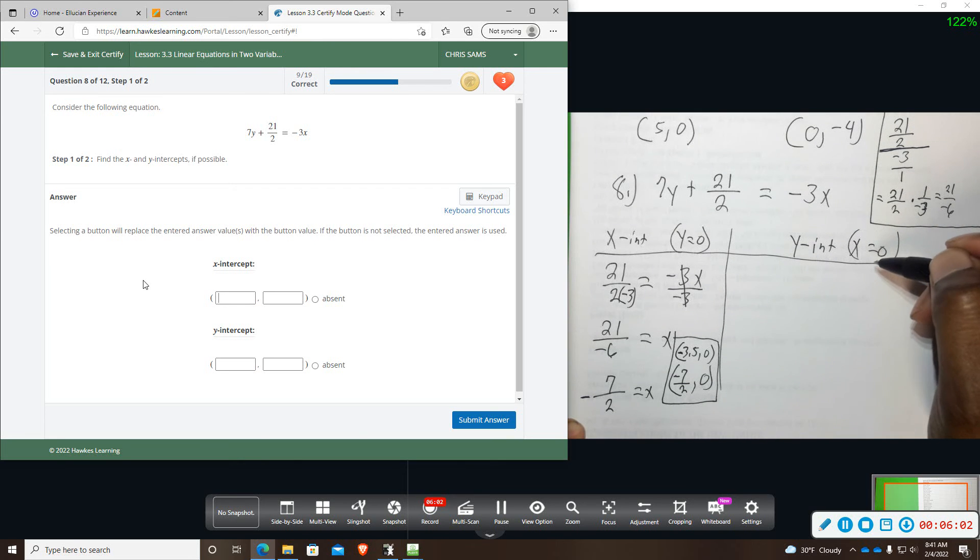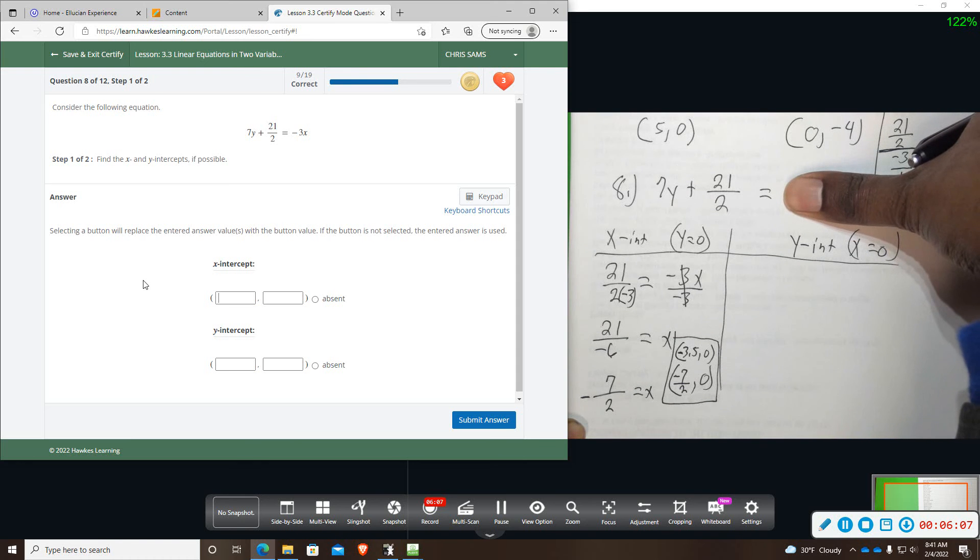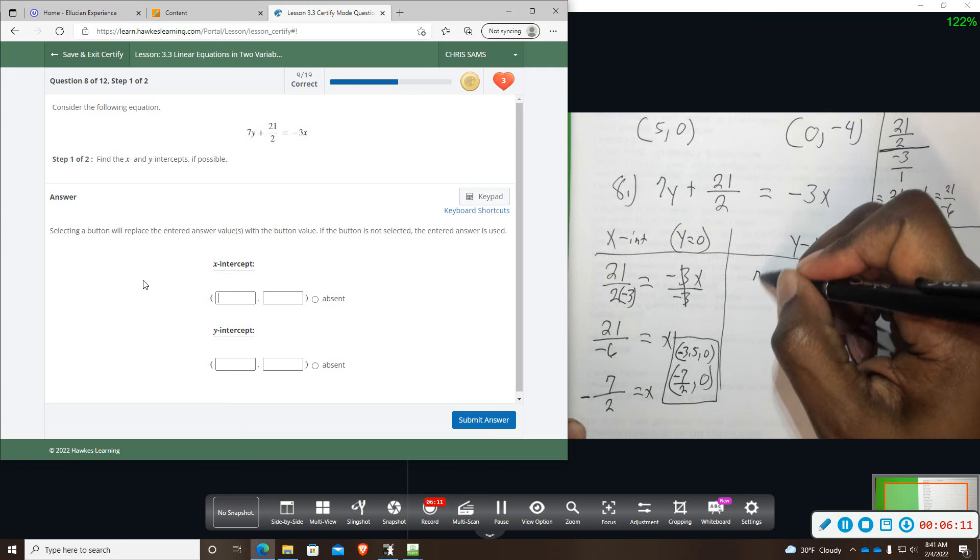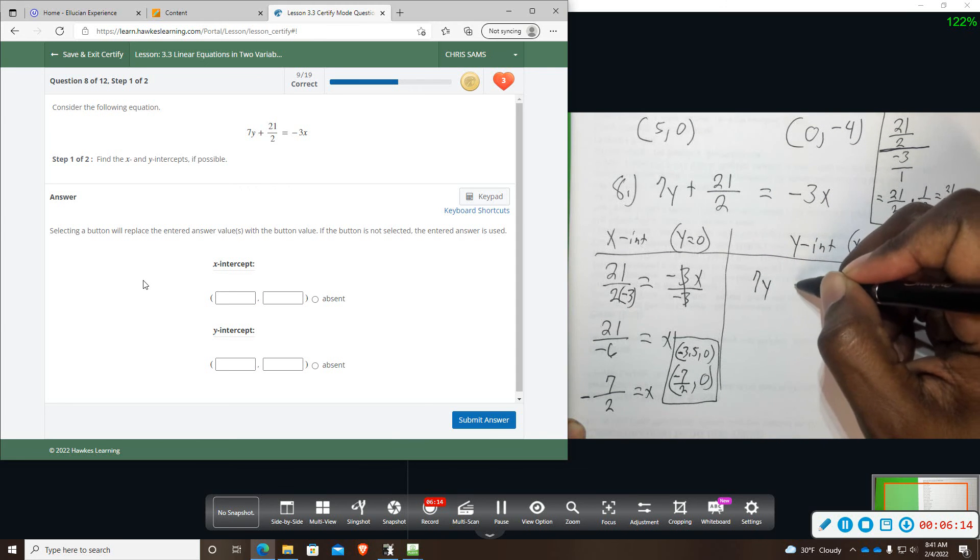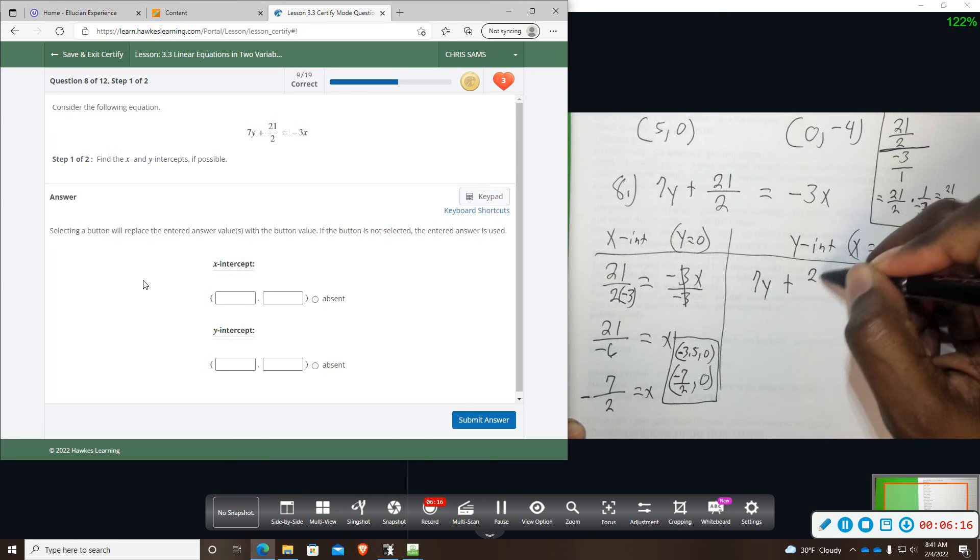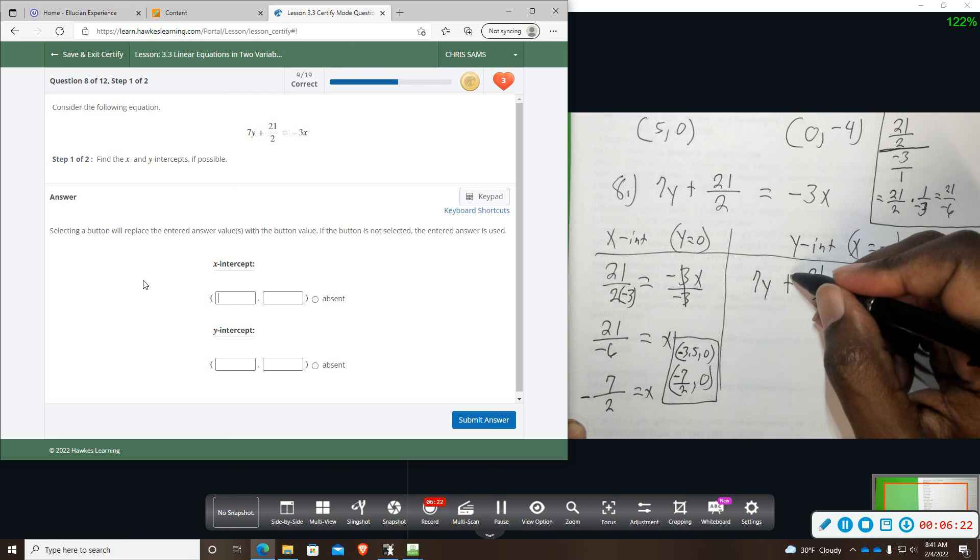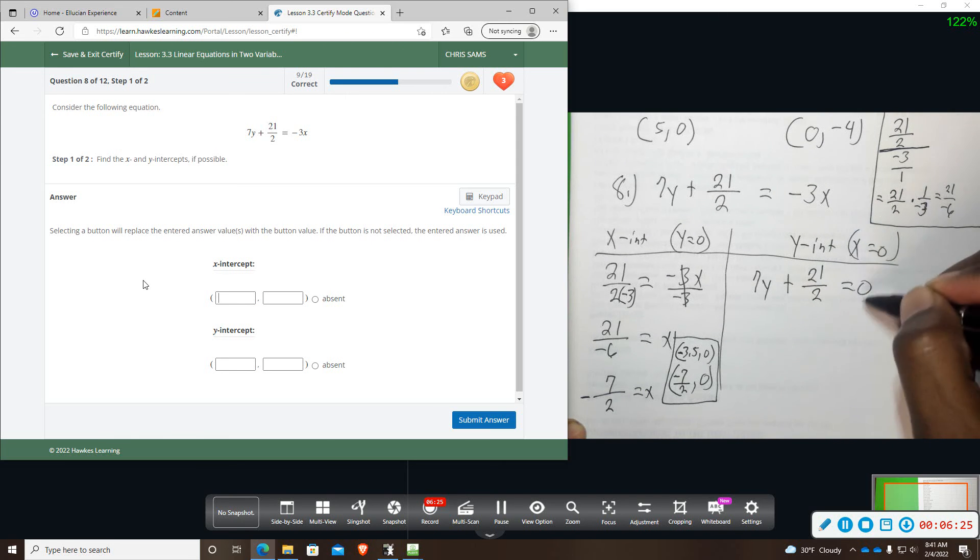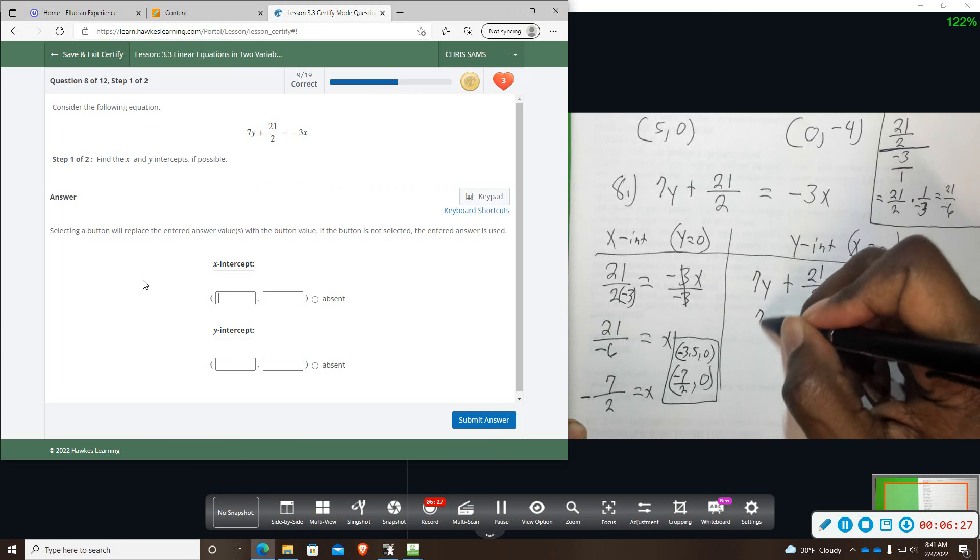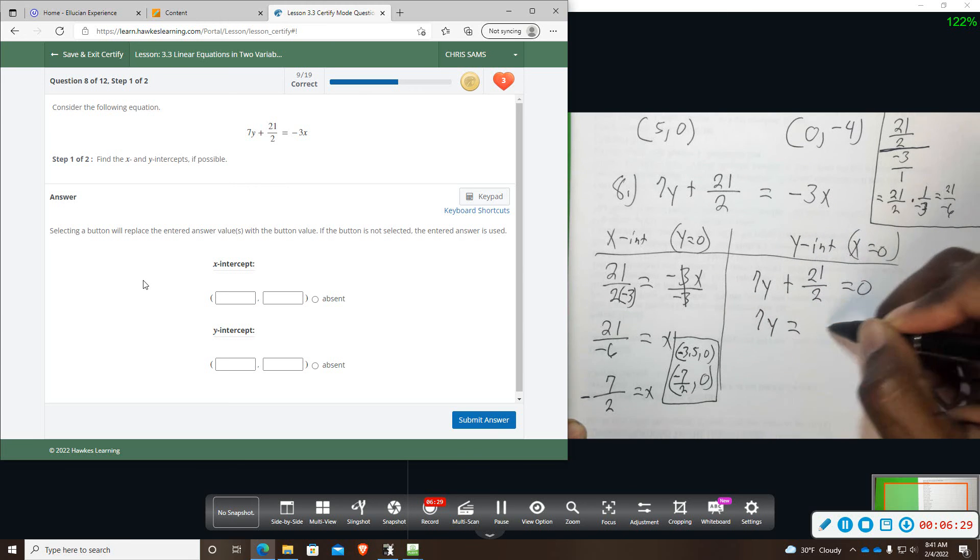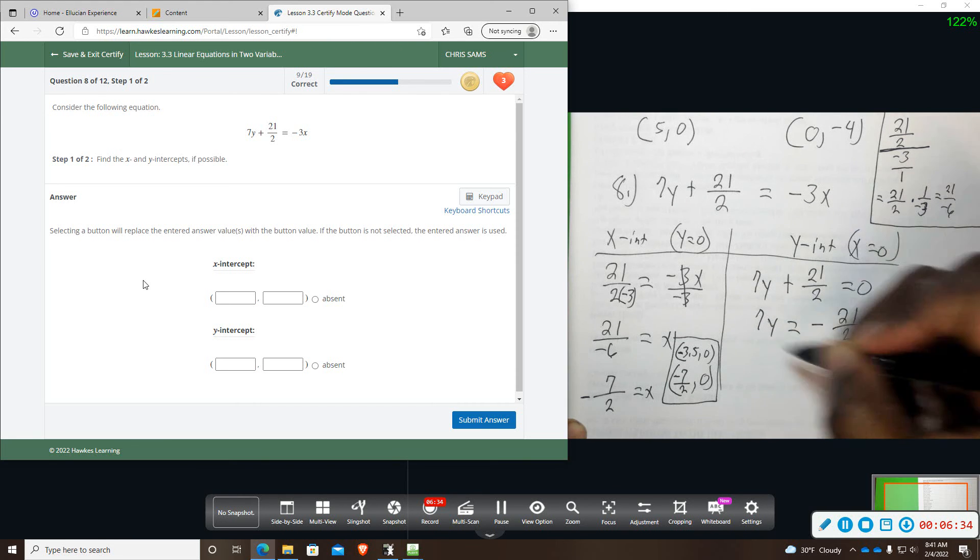And then the y intercept, we're going to do the same thing. This time the x is 0, so we will have 7y plus 21 over 2 equals 0. And then we're going to move the 21 over 2 over by subtracting it. That's going to give me 7y equals negative 21 over 2, and we're going to divide by 7.